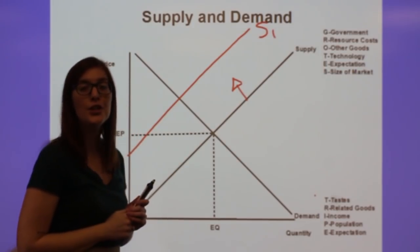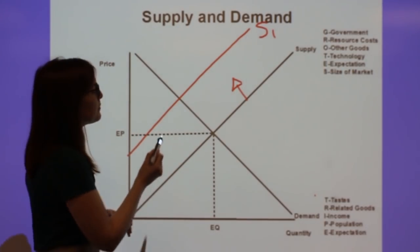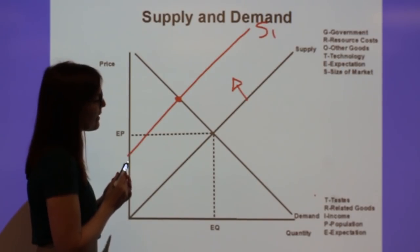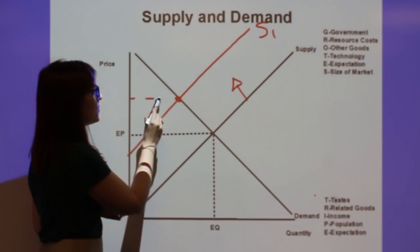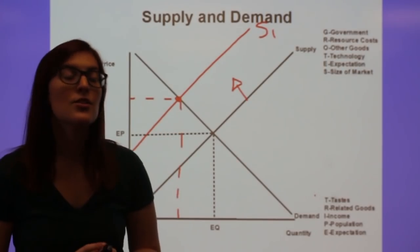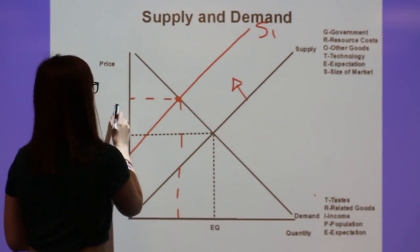If supply decreases and moves to the left, then we notice we have a new equilibrium by equilibrium where the supply and demand line intersect.